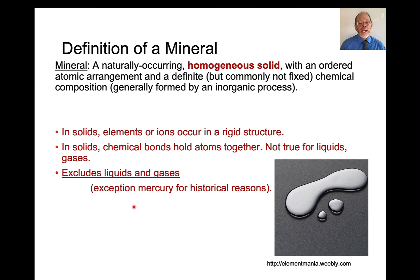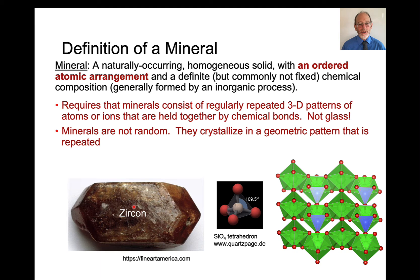A mineral has to be a homogeneous solid. In solids, elements and ions occur in a rigid structure, and that's not true for liquids and gases. So the homogeneous solid component excludes liquids and gases. It also excludes solids that are not homogeneous — for example, a rock that consists of many different crystals is not homogeneous. As you move across the rock, it changes composition and crystal structure. There is an exception for mercury as a liquid if it occurs naturally, and that's just for historical reasons.